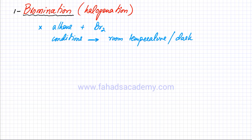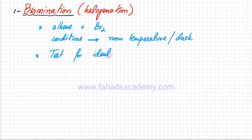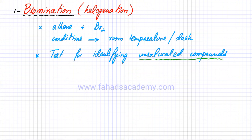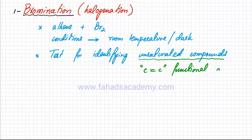This particular reaction is also considered to be a test for identifying unsaturated compounds. By unsaturated compounds, I'm referring to any compound that contains the C double bond C functional group — essentially, we're talking about alkenes. Any compound that contains C double bond C is an unsaturated compound, so this reaction is used as a test for identifying unsaturated compounds.